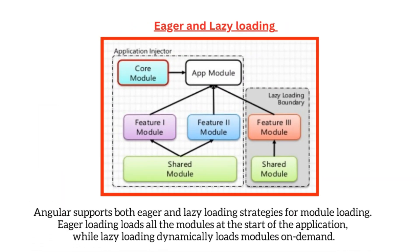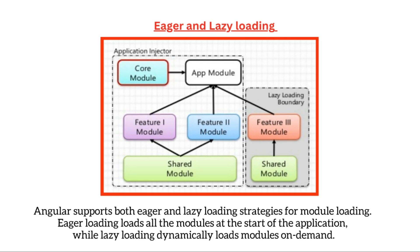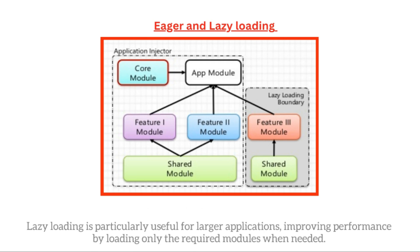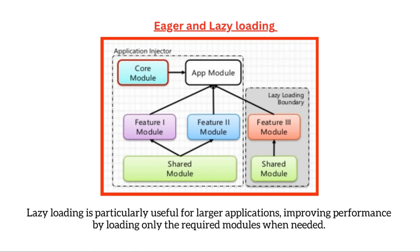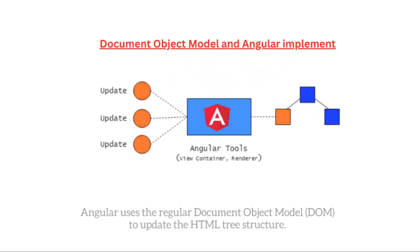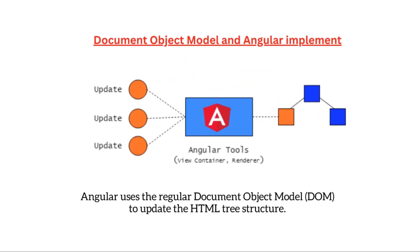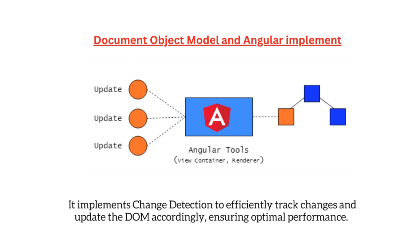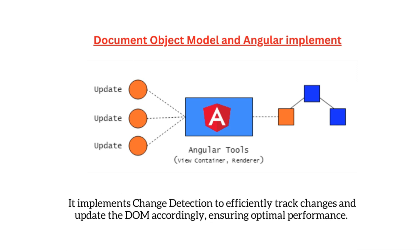Angular supports both eager and lazy loading strategies for module loading. Eager loading loads all the modules at the start of the application, while lazy loading dynamically loads modules on demand. Lazy loading is particularly useful for larger applications, improving performance by loading only the required modules when needed. Angular uses the regular Document Object Model (DOM) to update the HTML tree structure, implementing change detection to efficiently track changes and update the DOM accordingly.